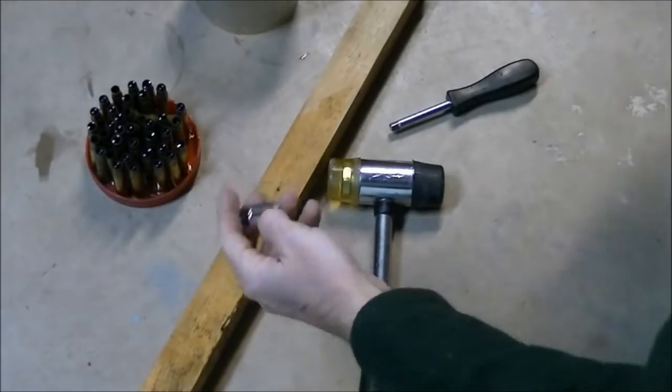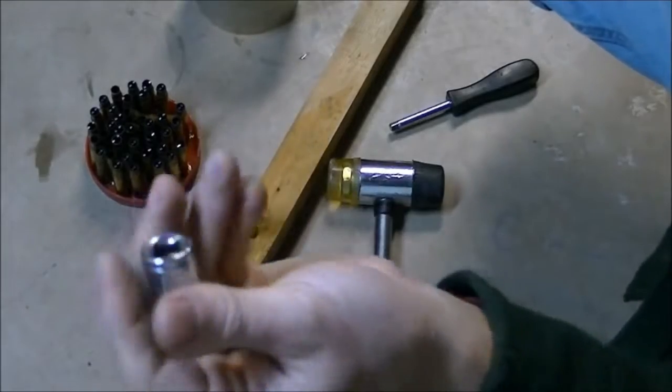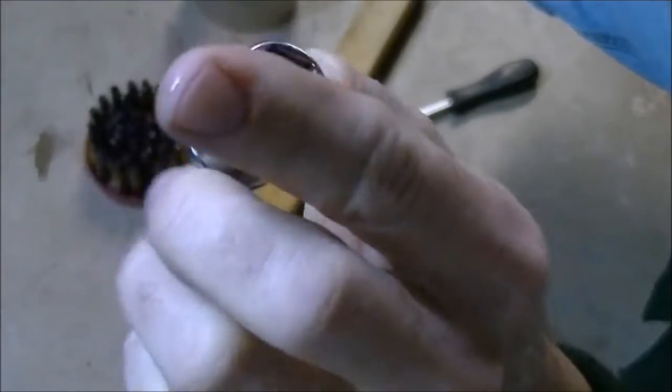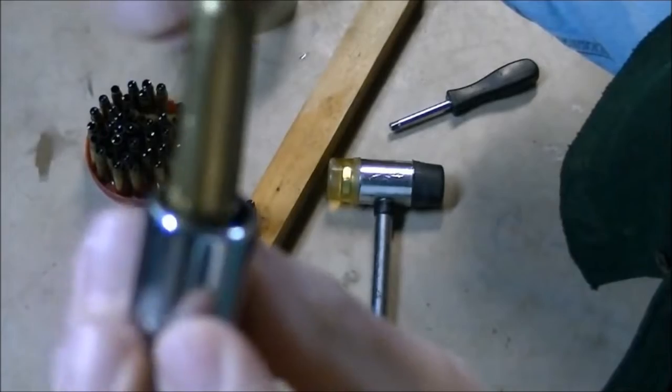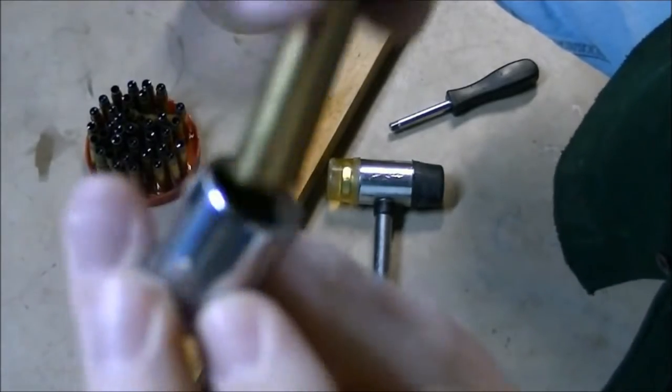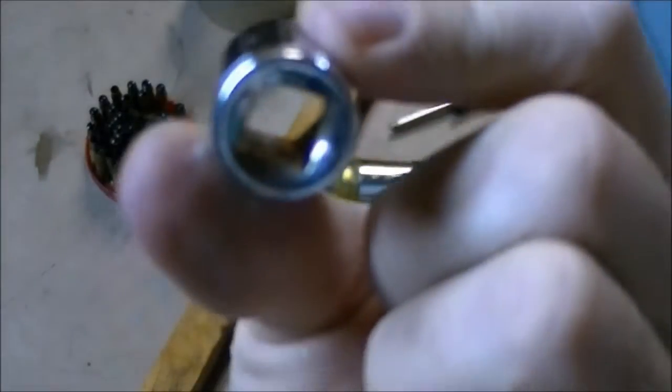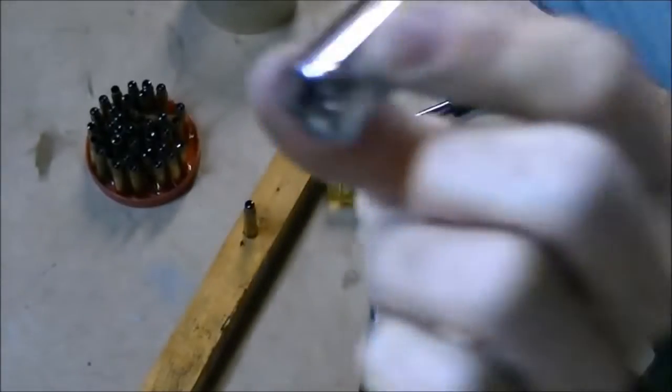I've got a spacer for the brass to fit inside. And I'm using a 9/16th size socket. As you can see there the brass fits inside the socket as a spacer. And of course the socket has a hole through it so that's somewhere for the primer to get pushed out of.